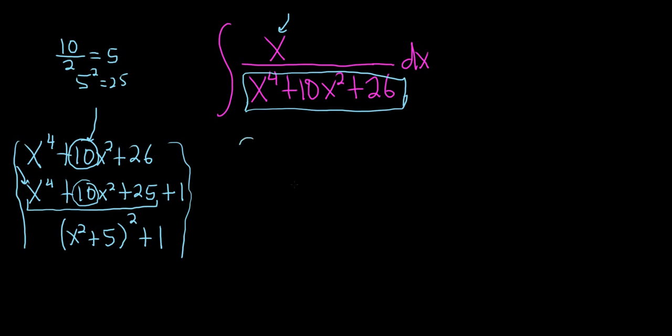Let's go ahead and rewrite our integral. So this is x over x squared plus 5 squared plus 1 dx.